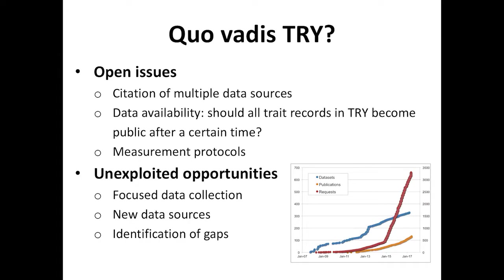I would like to get some feedback on where the community thinks the TRY database could move forward most to serve the community best. We have a few open issues. We request that if you use data from a dataset contributed to TRY, the original data source must be cited. But this is often above the limits of journals — you can easily have 50, 60, or 100 data contributions to reference, and journals have a limit of around 50. I hope journals will change their approach to this.